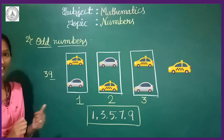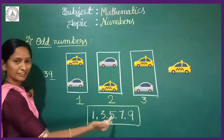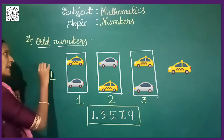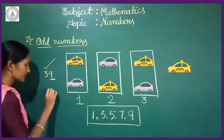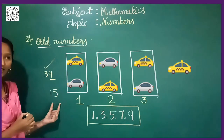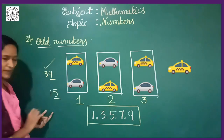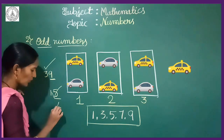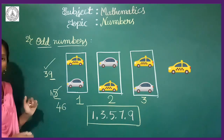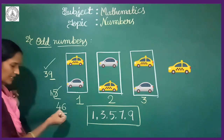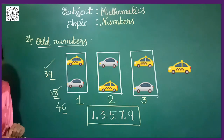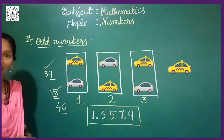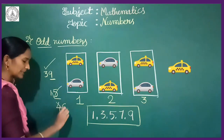It is 9. The numbers that end with 1, 3, 5, 7, and 9 are called odd numbers. It ends with 9, so it is an odd number. Next, take the number 15 — even or odd? Check the 1's place: it is 5, so it is an odd number. Next, take 46 — even or odd? Observe the 1's place: it ends with 6. The odd numbers end with 1, 3, 5, 7, and 9, but here is 6, so it is not an odd number — it is an even number.